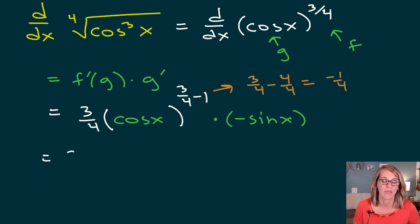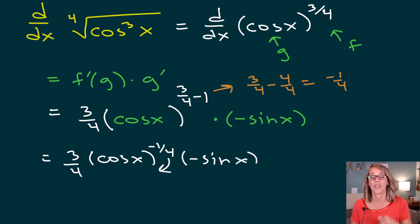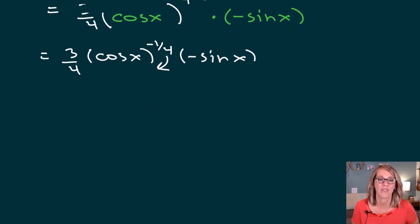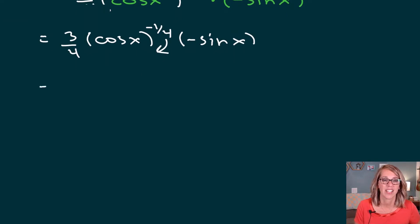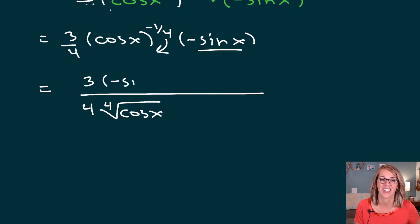So what do we have? We've got 3 fourths, cosine x to the negative 1 fourth, and negative sine of x. That negative 1 fourth needs to go down into the denominator and change into a fourth root. This gives us a fraction: the 3 stays in the numerator, the 4 in the denominator. For my cosine, I'm going to move it into the denominator as a fourth root of cosine of x, but the negative sine x stays in the numerator.